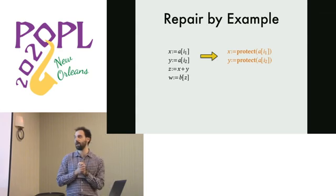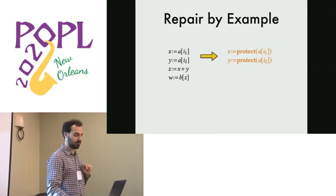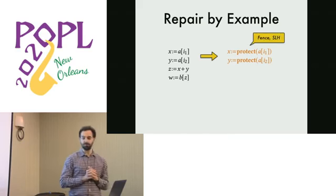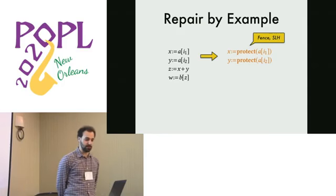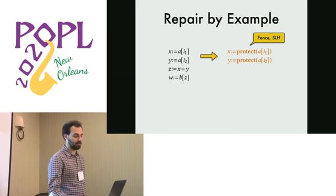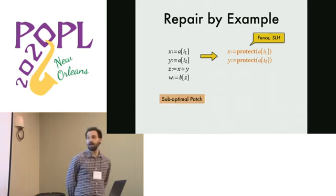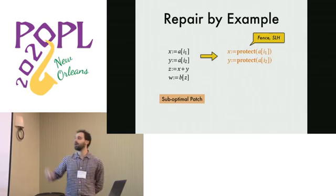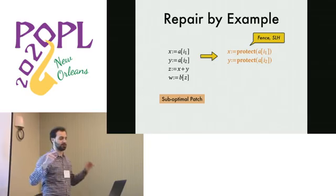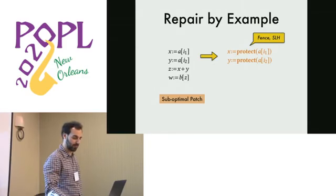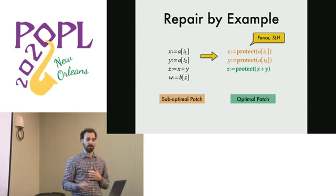We can repair programs vulnerable to Spectre by inserting fences. In our work, we look at a general API, a protect that can turn transient data into stable data. So this is one way to fix the program. This is a suboptimal patch because it requires two protects. After protect, X and Y are stable. They are not transient anymore. This is a better patch because we only use one protect.